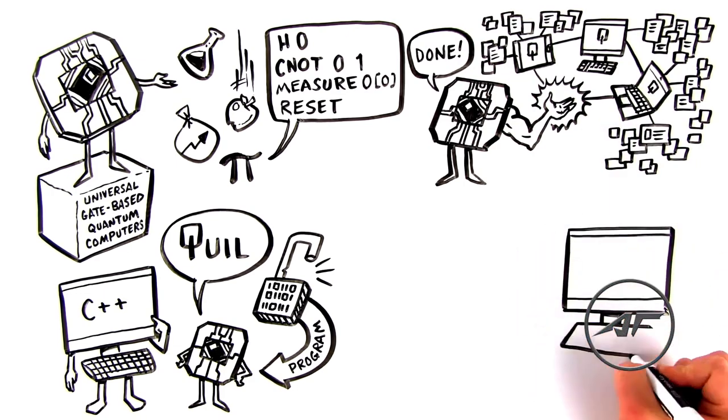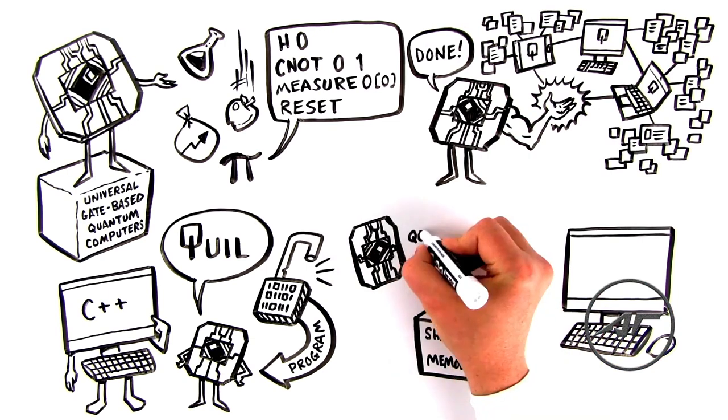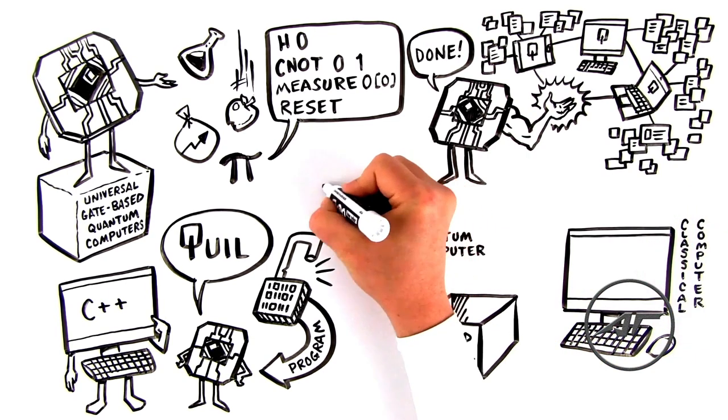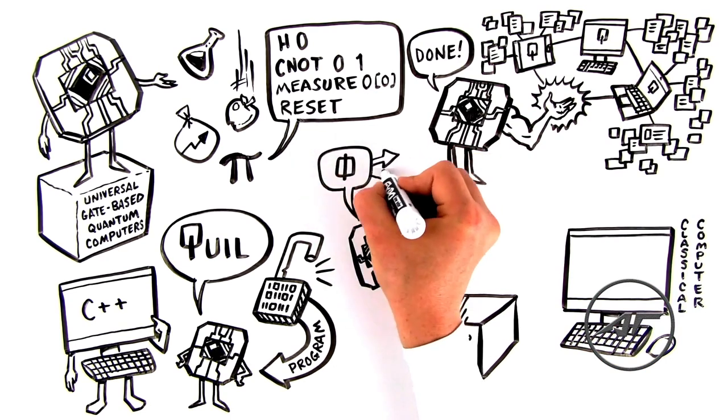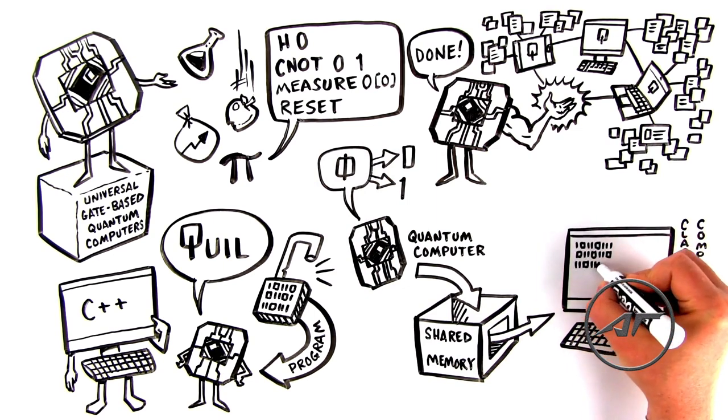Classical computers can talk with quantum computers running quill with shared memory. Basically, you've got your quantum computer and your classical computer, and whenever a qubit turns into a zero or a one, it drops into shared memory, which your classical computer can use to perform a calculation.